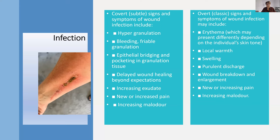Moving along to the I in TIMES: infection. Local infection refers to a stage of infection where there's a presence and proliferation of microorganisms that provokes a response from the host, causing a delay in healing. The covert signs — those you can see on screen — might not be immediately visible or recognisable as infection. These include hypergranulation: that overgranulation where the tissue bleeds very easily to touch, is almost too bright red — overgranulated because of bacterial growth.